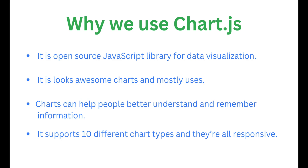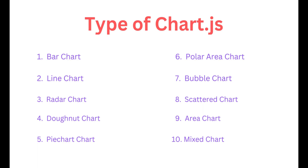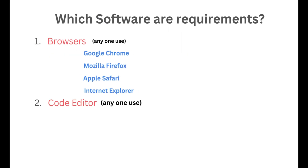It supports 10 different types of charts and they are responsive. The different types of charts are: bar chart, line chart, radar chart, doughnut chart, pie chart, polar area chart, bubble chart, scatter chart, area chart, and mixed chart.